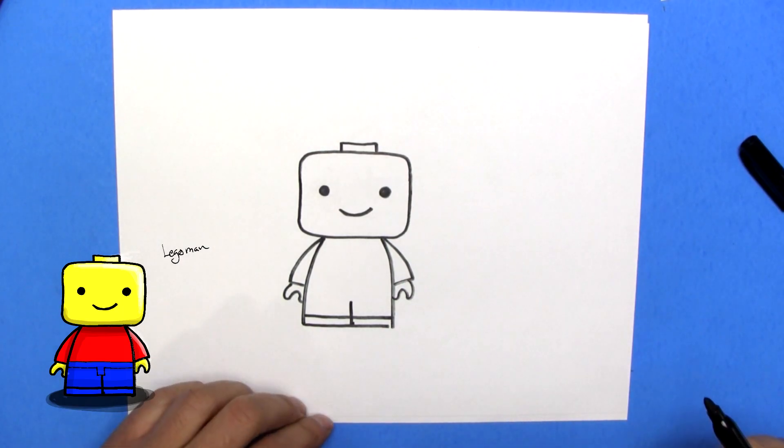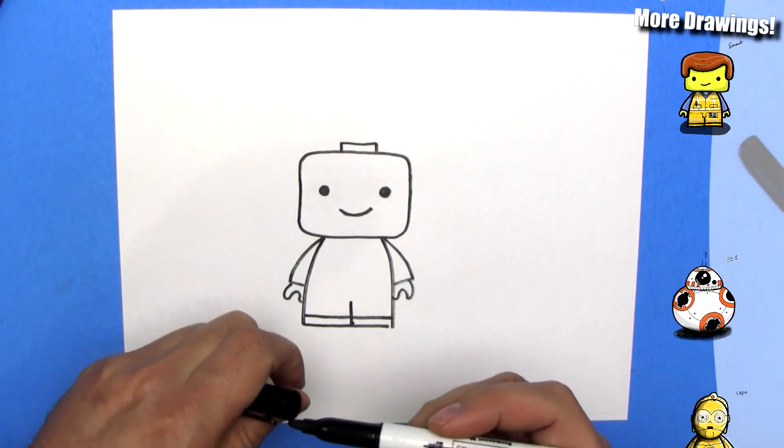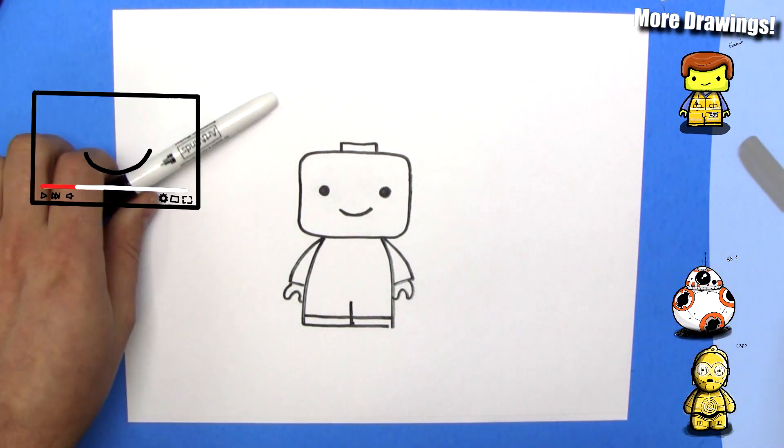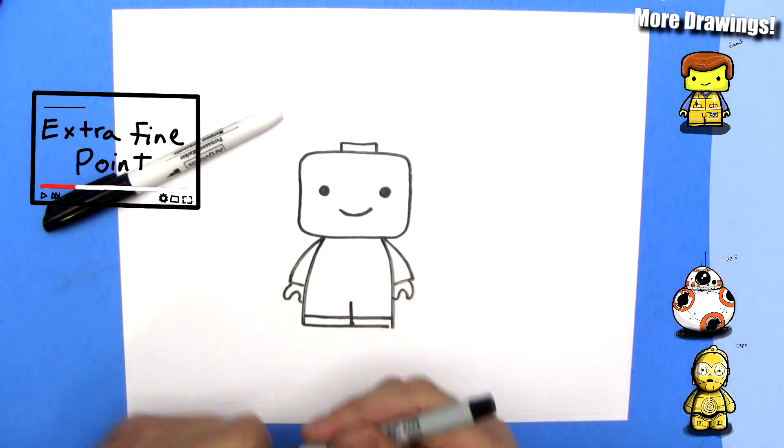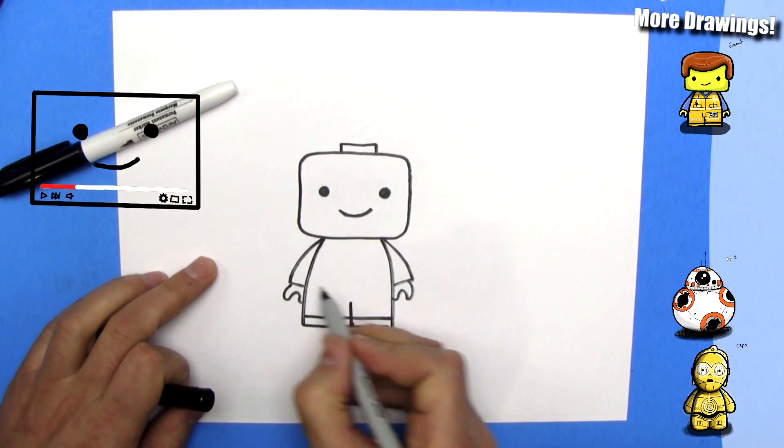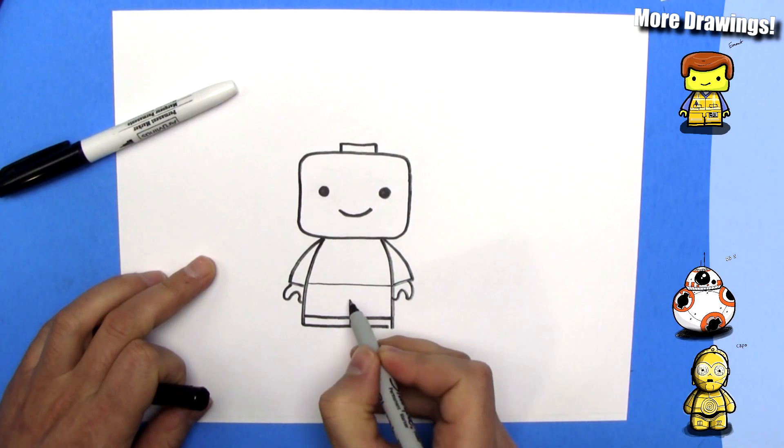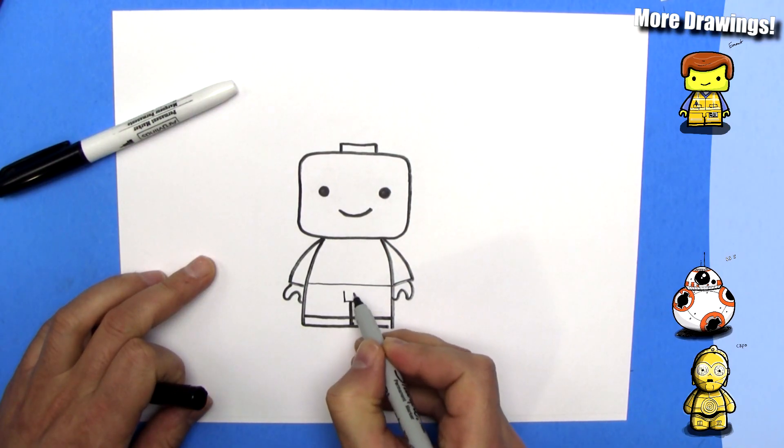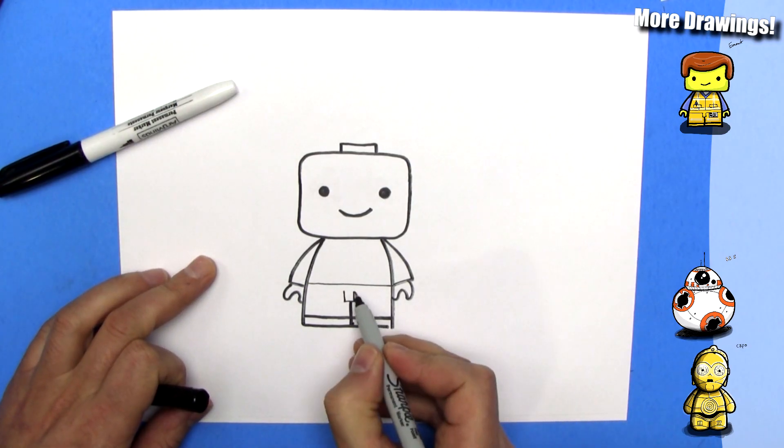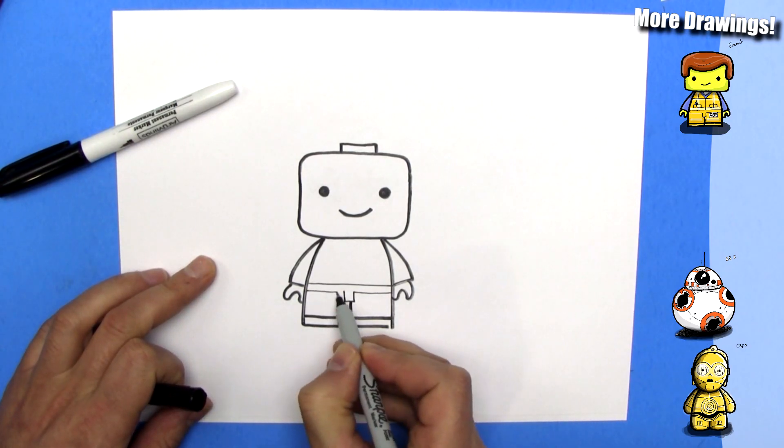And I'm going to switch to my fine marker, the fine Sharpie, fine point Sharpie. We're going to draw a line right across here. And then we're going to draw a bit of a line here, not connecting. And then we're going to draw a line here and a line here.